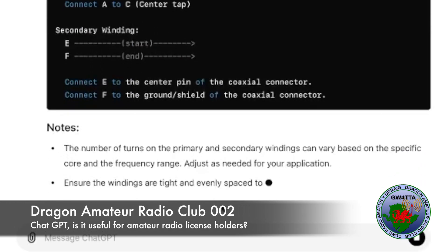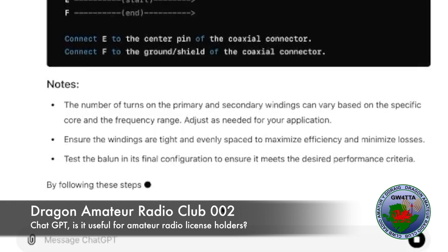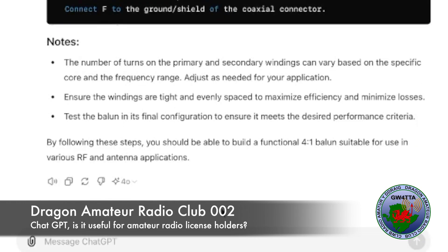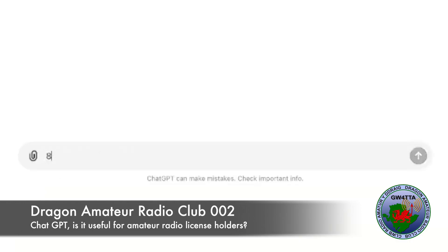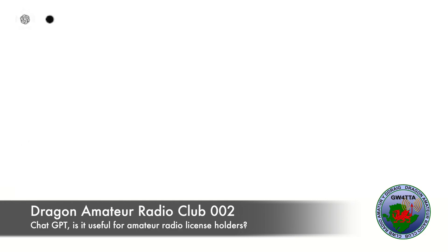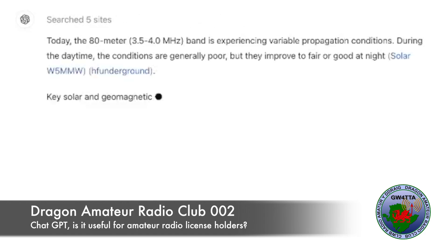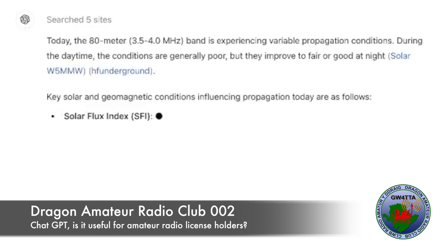Of course, as with anything, you should always test it before you use it. What about if you want to use the 80 metre band and you need to know what the propagation is going to be like today? Well, ChatGPT can give you the propagation for any of the bands based on information that it gathers from the internet.